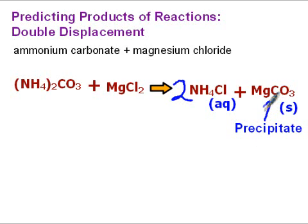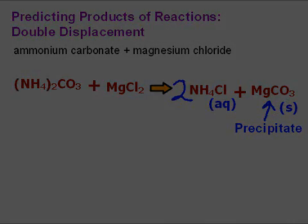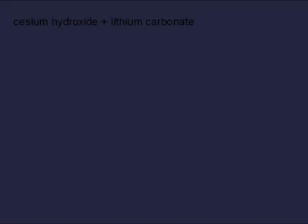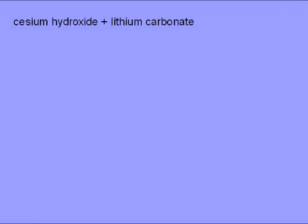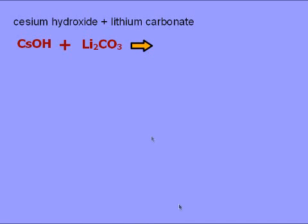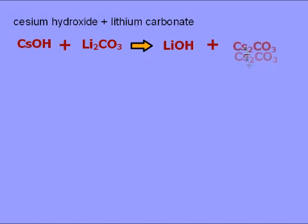Another word for not soluble is solid — so that's going to be our product of the reaction. This reaction does occur, and MgCO3 is our product. Let's now look at a second reaction: cesium hydroxide plus lithium carbonate. Cesium is +1, hydroxide is −1, so that's CsOH. Lithium is +1, carbonate is −2, so that's Li2CO3. Those are our two reactants.